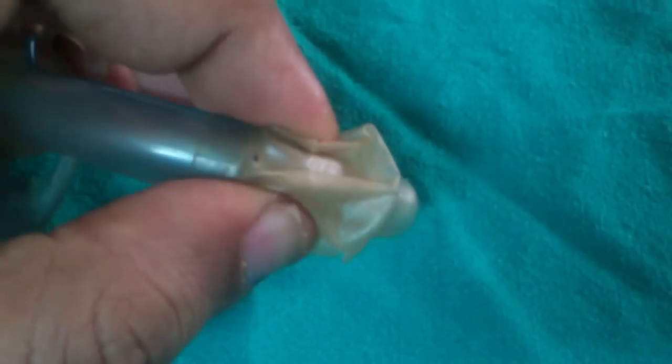In such cases, we will use what is called the Portex Tracheostomy tube. The Portex Tracheostomy tube has an inflatable cuff that secures it into position.